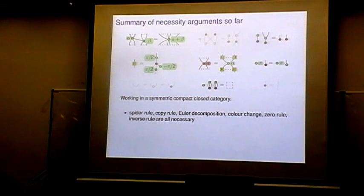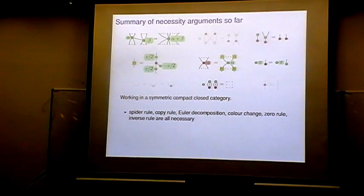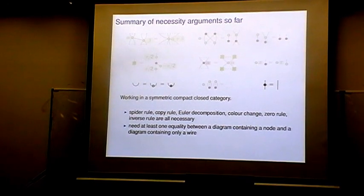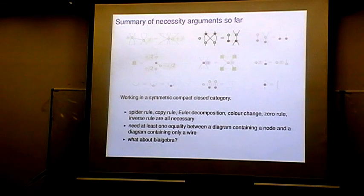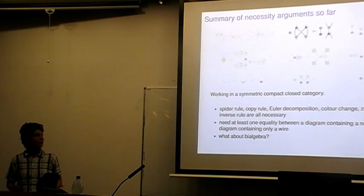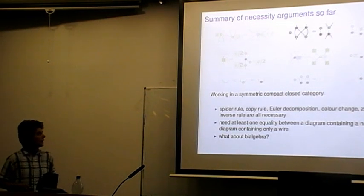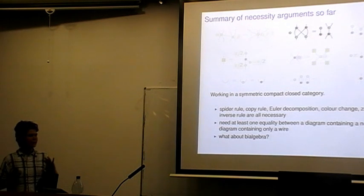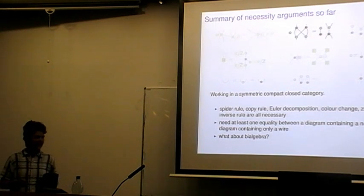Summarizing: out of the nine rules we have, six are definitively necessary. For two others we know we need at least one of them, possibly both — we can't say yet. The one rule I haven't discussed is the bi-algebra rule, which is what most of the previous talk was about. It axiomatises the notion of strongly complementary bases, which is crucial in quantum theory. It's vexing that we haven't found a satisfying way of proving this rule is necessary in our calculus — we're fairly certain it is, but the arguments we have are not very satisfying.